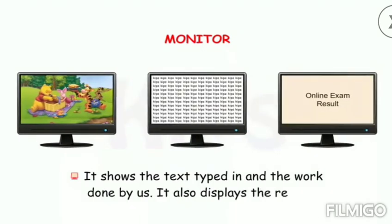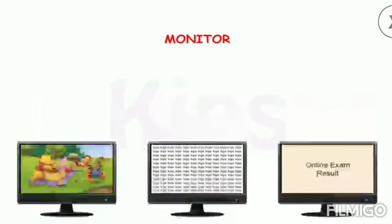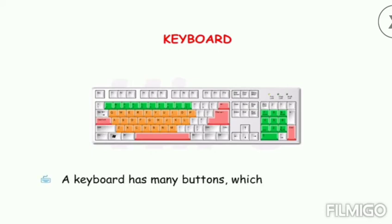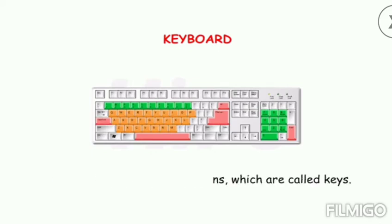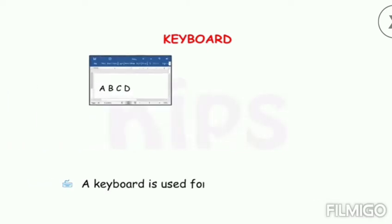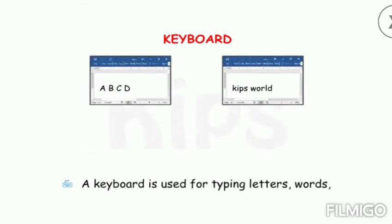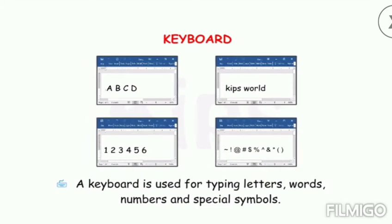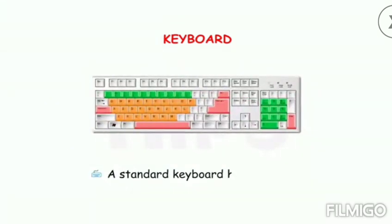The monitor also displays the results. Now let's talk about the keyboard. A keyboard has many buttons which are called keys. A keyboard is used for typing letters, words, numbers, and special symbols. A standard keyboard has 104 keys.